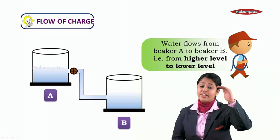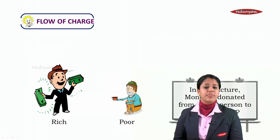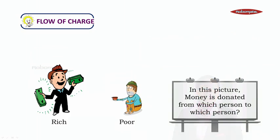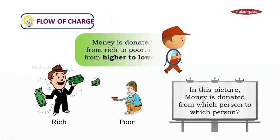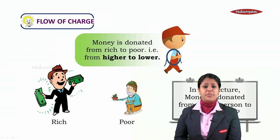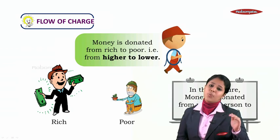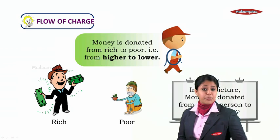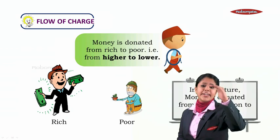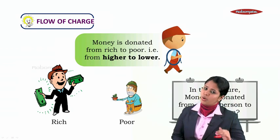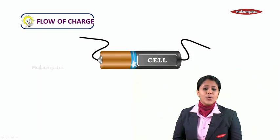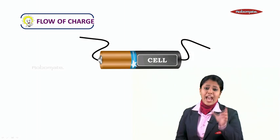In this picture, money is donated from one person to another. You can see that money is donated from the rich person to the poor person — again, from higher to lower. This reinforces the idea that flow always goes from a higher level to a lower level.